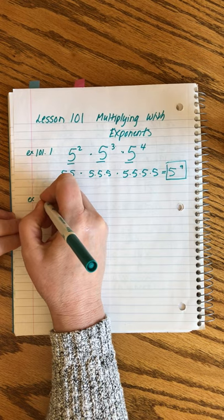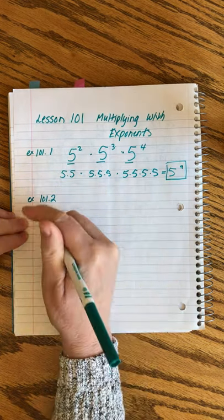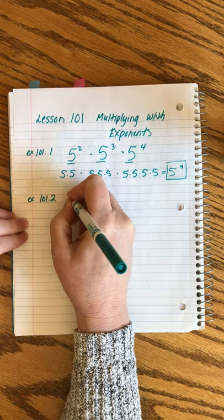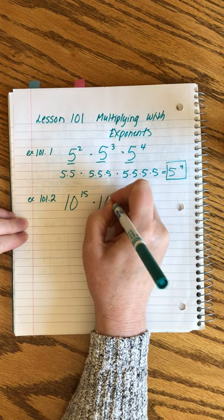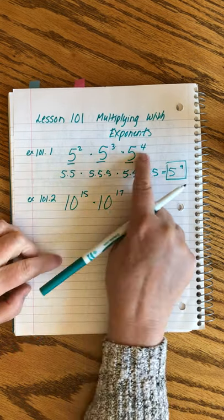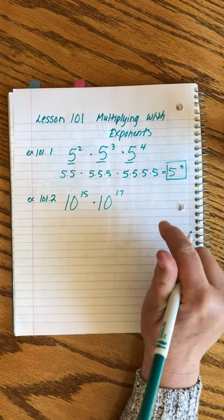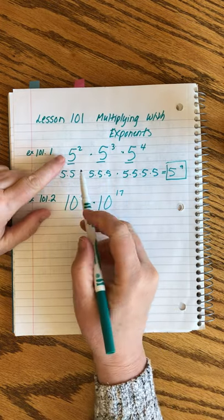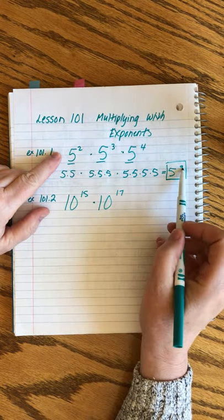Now, that's the long way. Because I don't know about you, but I don't want to be writing all those out, especially when we get into things like this, where our exponents are getting even bigger. 2, 3, 4 wasn't horrible, but I don't want to write 10, 15 times, and then 17 times. That's crazy. But if you notice back here, we added 1, 2, plus 3, plus 4 to get our 9th.